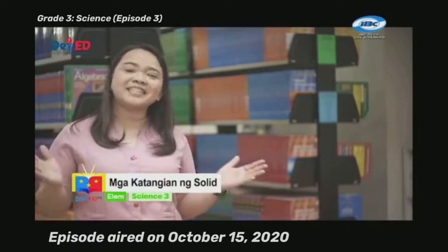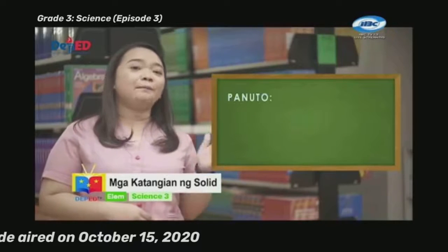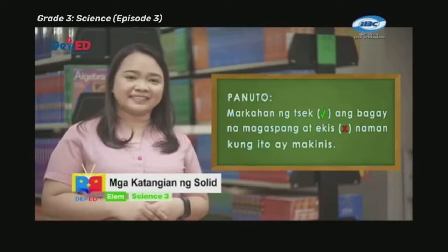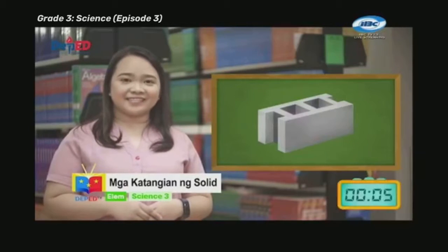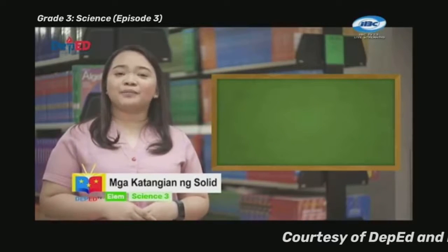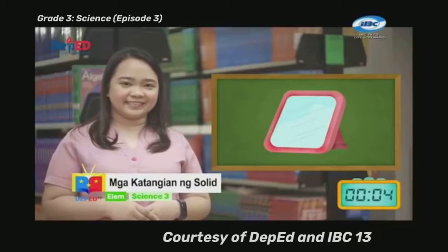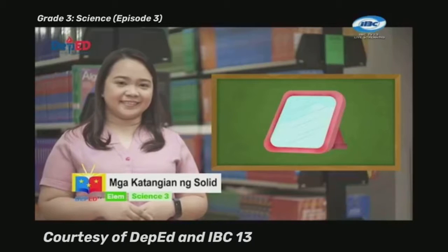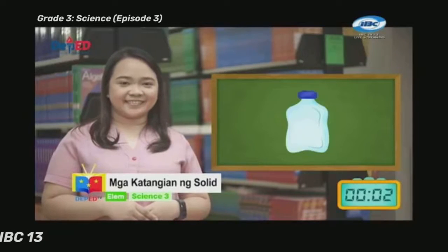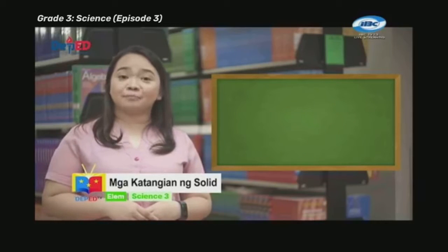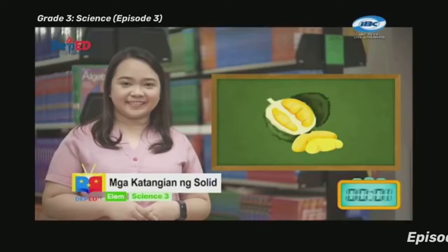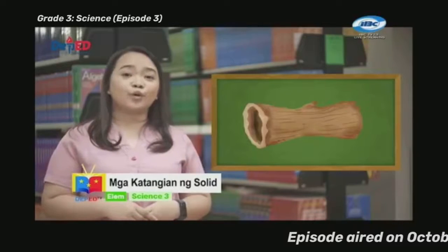Ngayon mga bata, dumako tayo sa ating pagsasanay. Panuto: markahan ng check ang bagay na magaspang at ekis naman kung ito ay makinis. Para sa unang bilang, halo black. Para sa ikalawang bilang, salamin. Para sa ikatlong bilang, bote. Para sa ikaapat na bilang, durian. Para sa ikalimang bilang, troso. At para sa ikaanim na bilang, orange.